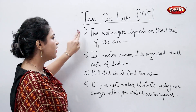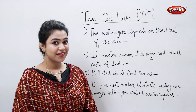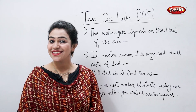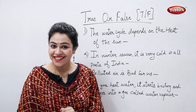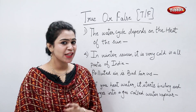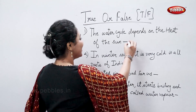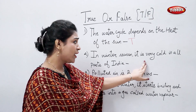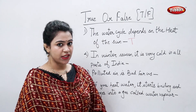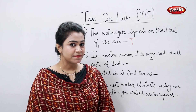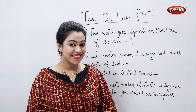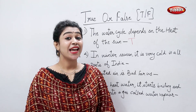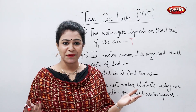True or false: the water cycle depends on the heat of the sun. And snow comes — yes, that's true. In winter season it is very cold in all parts of India — is it true or false? False, in some parts of India it is not very cold.